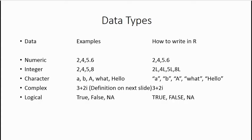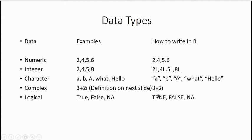The next data type is called logical data. There are certain specific values used for logic in R: TRUE, FALSE, and other logical values. To type logical data in R, you simply type them in capital letters — TRUE, FALSE, etc. This is different from character data because logical data is not enclosed in quotation marks. If you enclose TRUE in quotation marks, it will become character data.